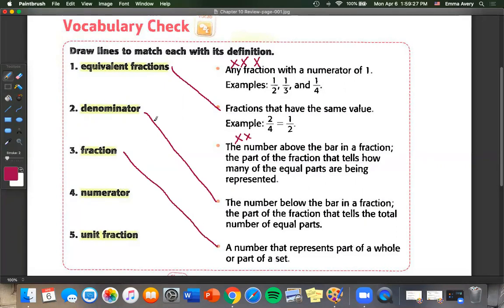Numerator. Well, if we know a denominator is on the bottom, a numerator must be on the top. And a unit fraction, well, that must be our last one, but we also know this one's right because a unit fraction always has a one on top.